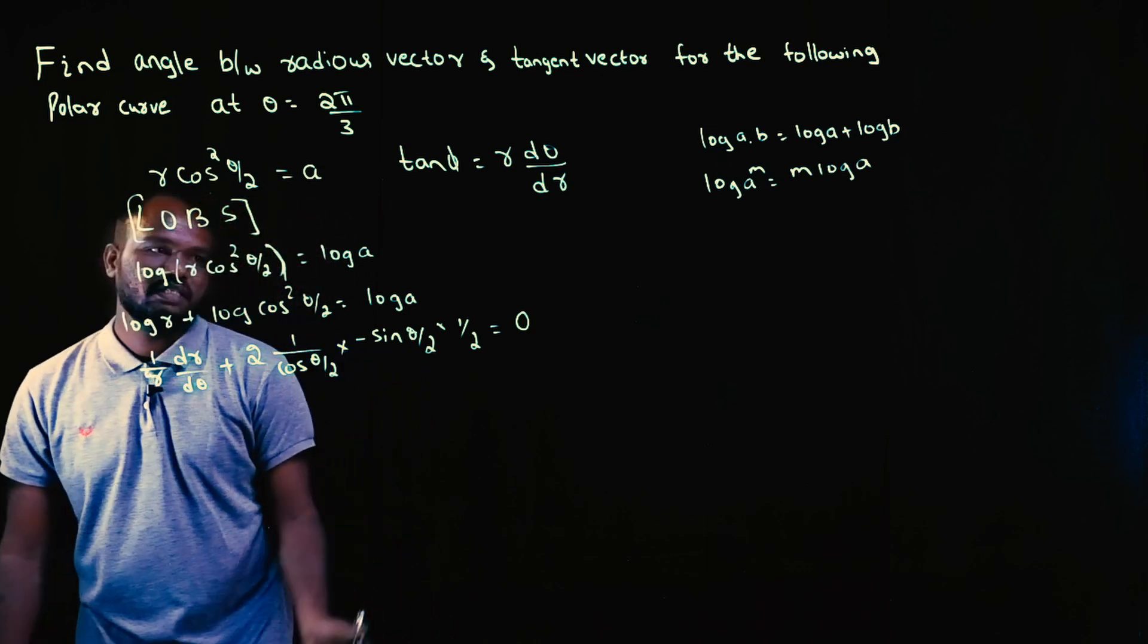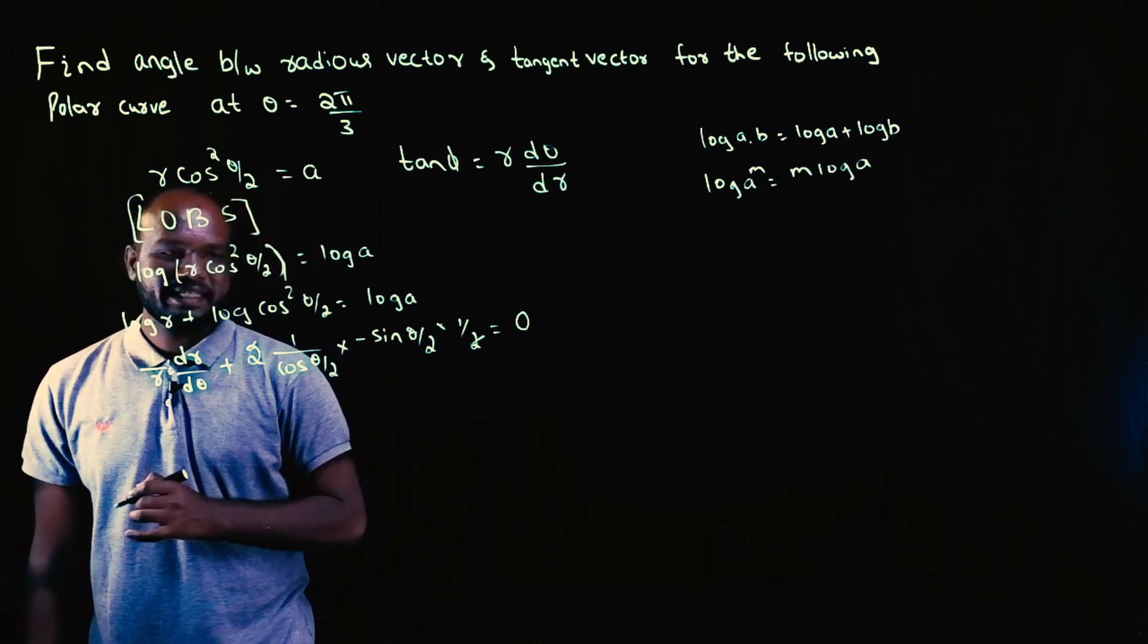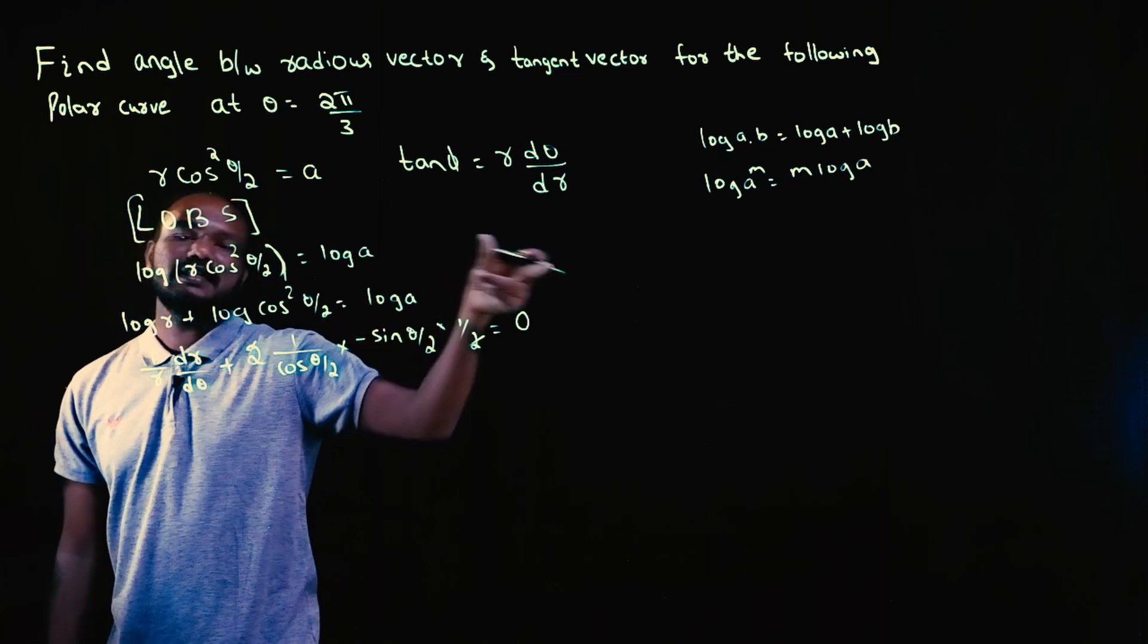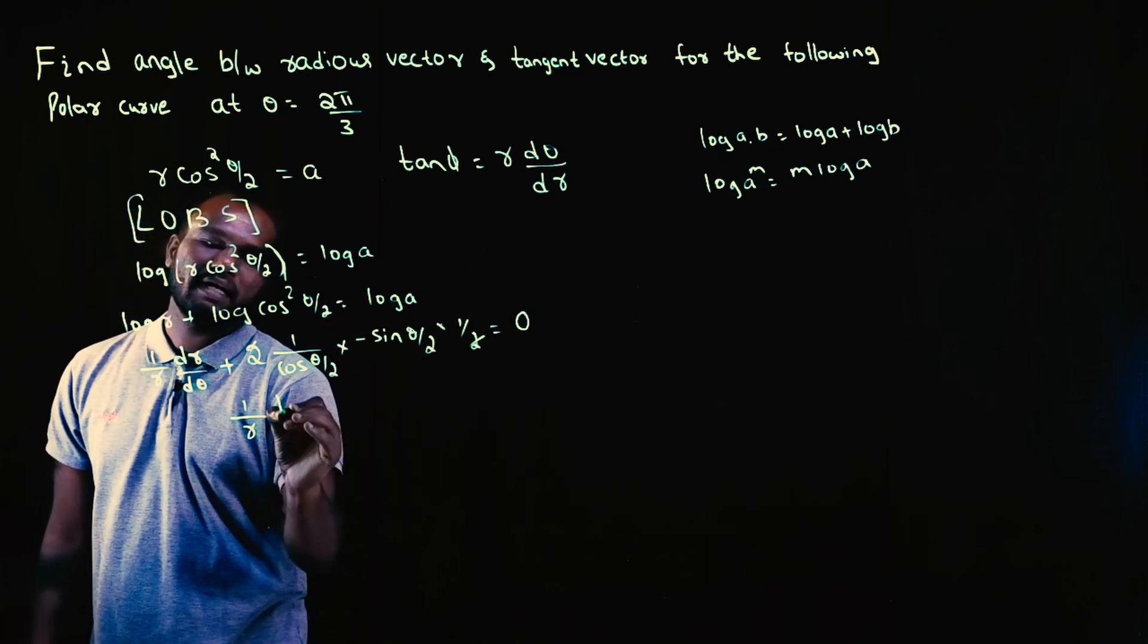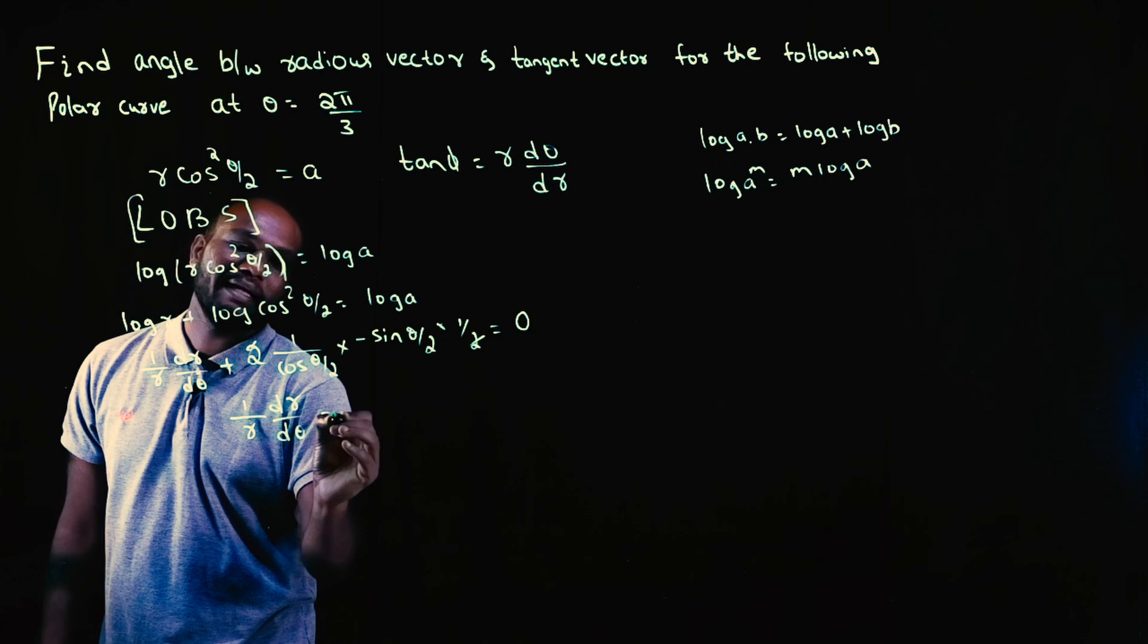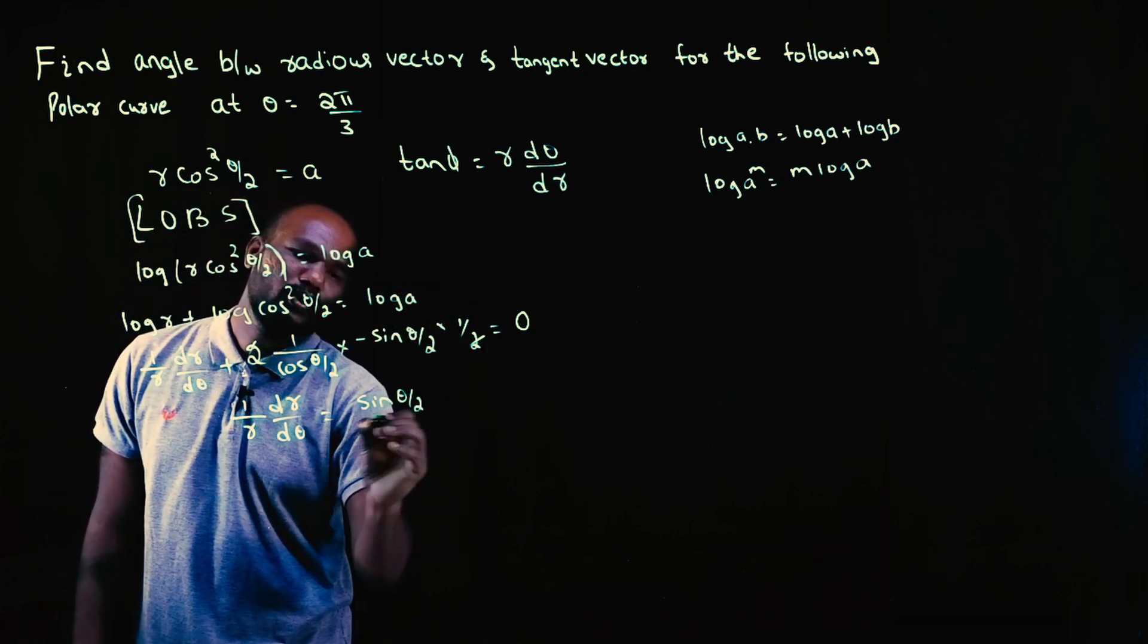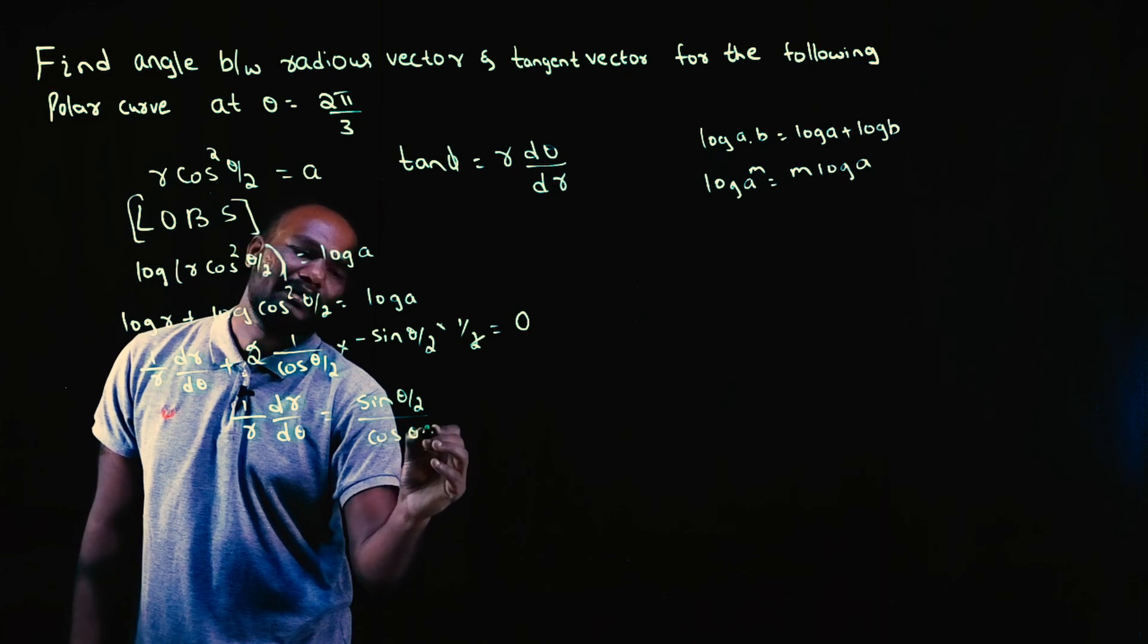See here, see here very closely. This 2, this 2 get cancelled. Plus into minus is minus. So I can take entire thing that side. So 1 by R, dR by d theta is equal to minus is there. That will become plus.